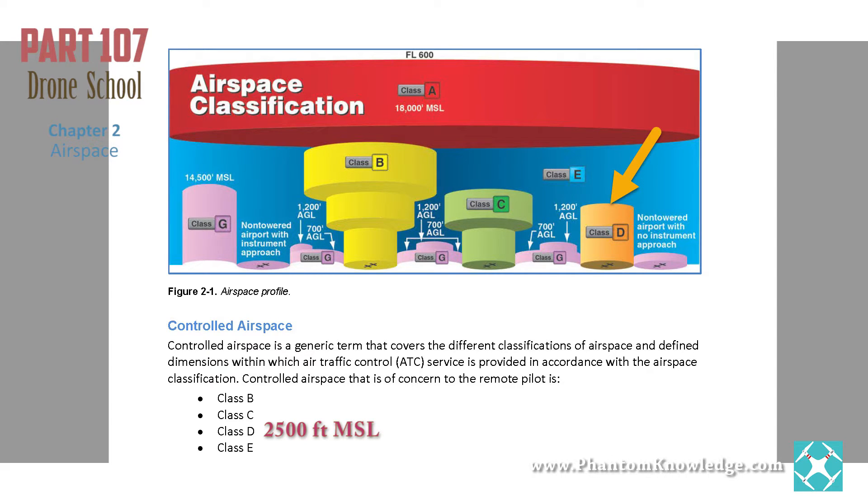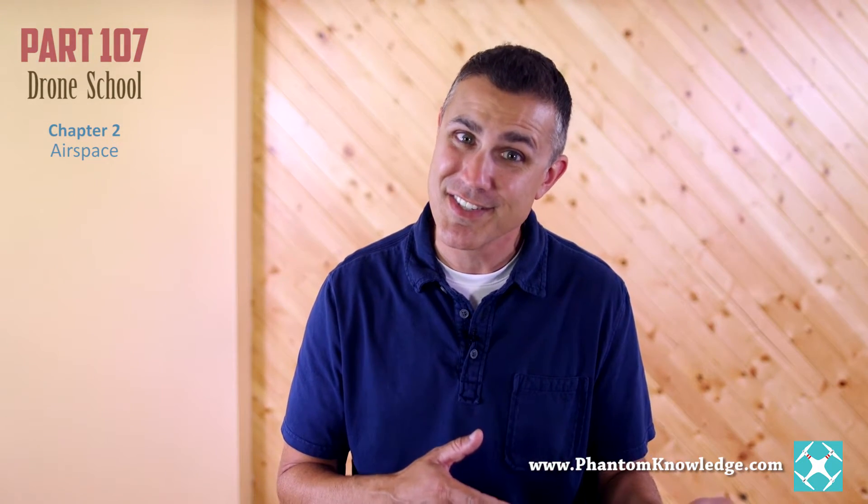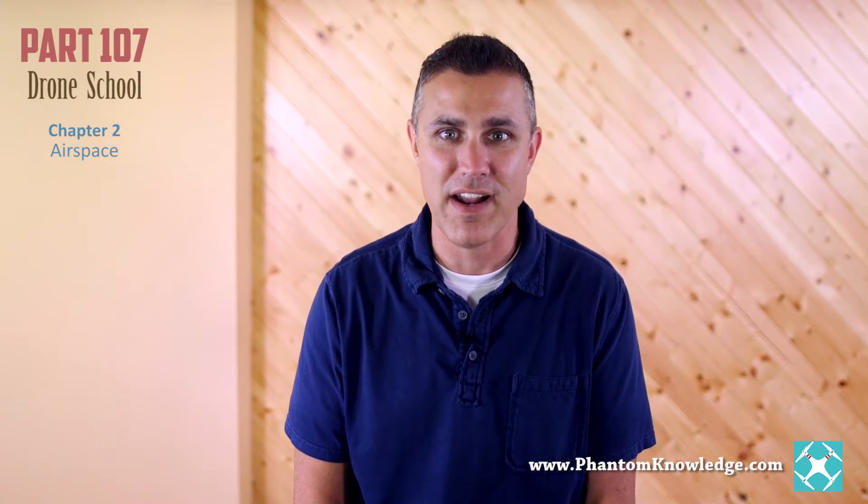Let's look at Class D airspace next. The wedding is over and there's no more cake. Class D is just a straight column which extends from the surface to 2,500 feet MSL. Airports that have a control tower but are smaller and do not have radar approach control may still have instrument procedures, so manned pilots can fly in and out during inclement meteorological conditions, or IMC, meaning they will be flying IFR. When it's IMC out — commonly called cruddy weather, where you can't see squat outside your cockpit windows — pilots with the proper training and equipment can still fly around in Class D airspace, which means they won't be able to see and avoid you. So remote pilots must obtain permission before entering Class D airspace.